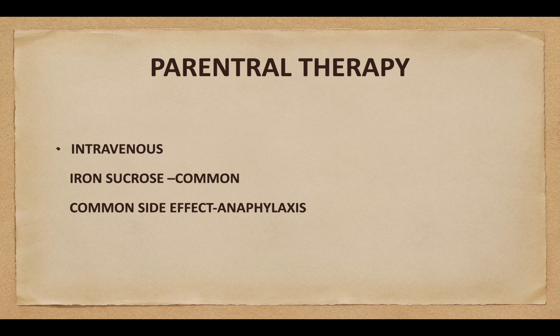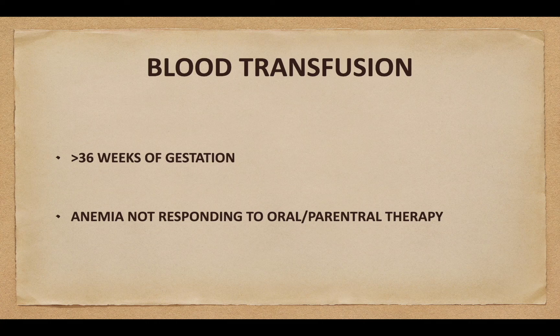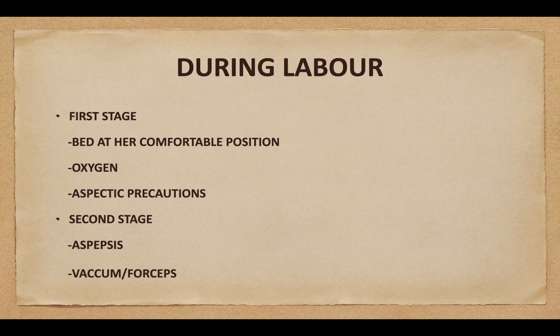Parenteral therapy: route of administration is intravenous; iron sucrose is the commonly used drug. Common side effect is anaphylaxis. Blood transfusion is usually indicated for women more than 36 weeks of gestation and for women in whom anemia is not responding to oral or parenteral therapy.